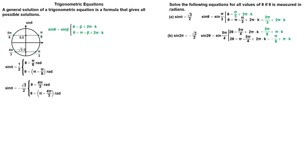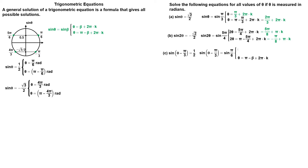The sine of theta minus pi divided by 3 is equal to 1 half. The reference angle is 30 degrees, or pi divided by 6 radians. Sine is positive in quadrant 1 and quadrant 2. We can write sine of theta minus pi divided by 3 is equal to sine of pi divided by 6. The general solutions are given as follows.